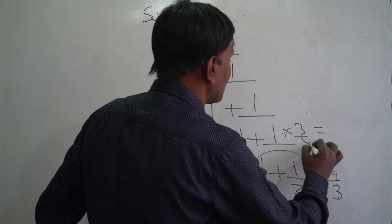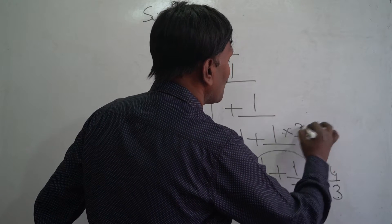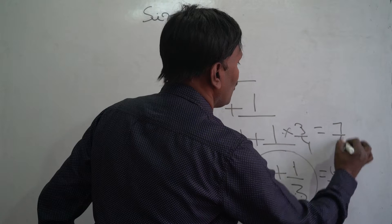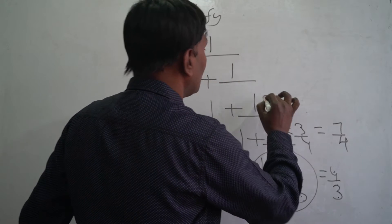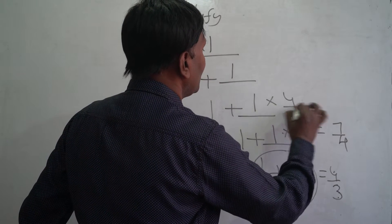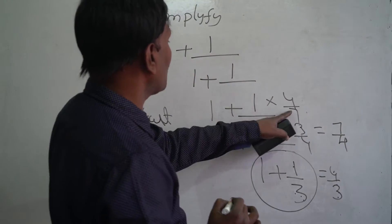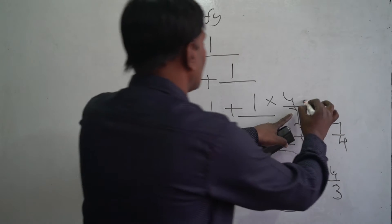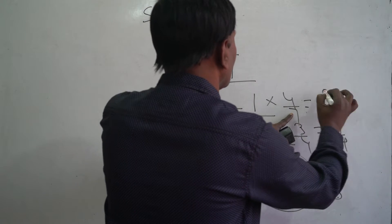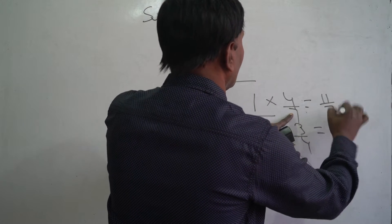So 1 plus 3 by 4: 4 plus 3 is 7 by 4. If it comes here it becomes 4 by 7. Then 1 plus 4 by 7: what is the result? 7 plus 4 is 11 by 7.